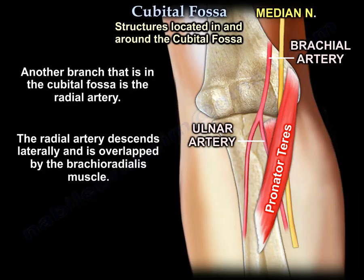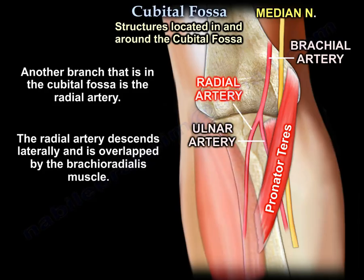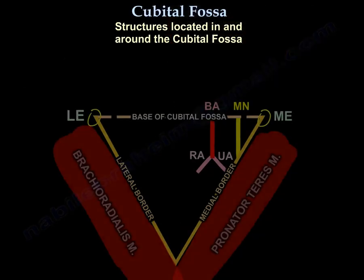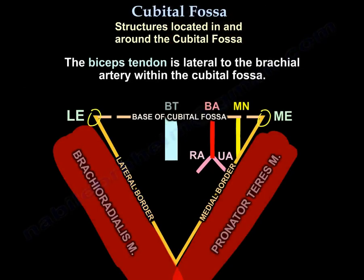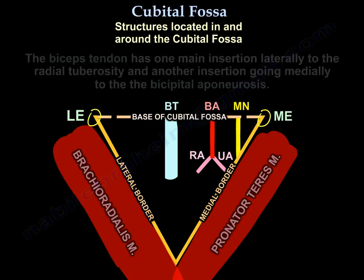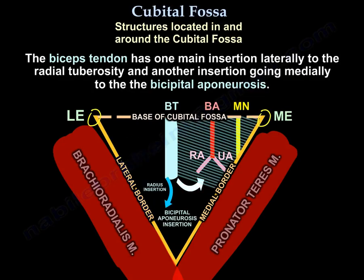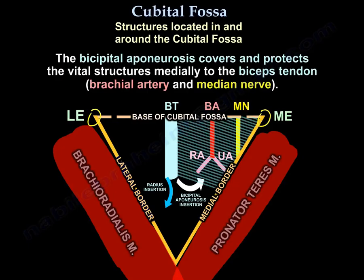Another branch in the cubital fossa is the radial artery, which descends laterally and is overlapped by the brachioradialis muscle. Another structure in the cubital fossa is the biceps tendon, which is lateral to the brachial artery. The biceps tendon has one main insertion laterally to the radial tuberosity and another insertion going medially to the bicipital aponeurosis. It covers and protects the vital structures medially — the brachial artery and the median nerve.